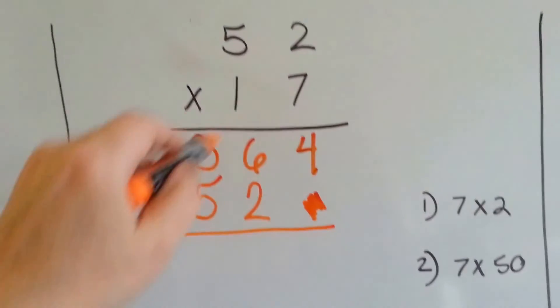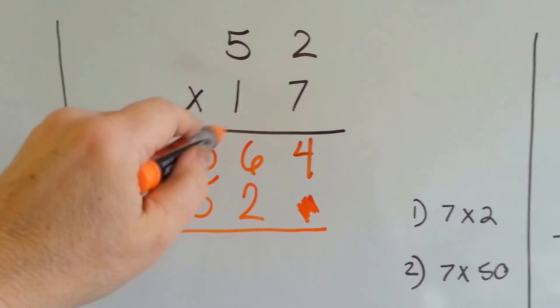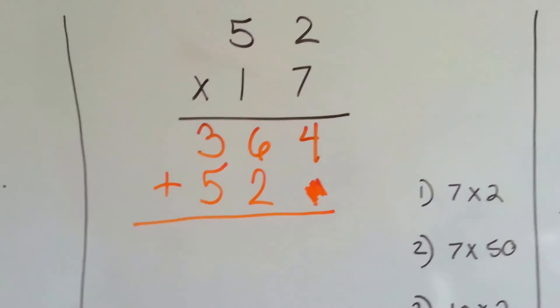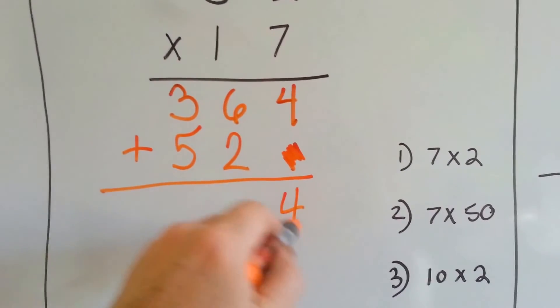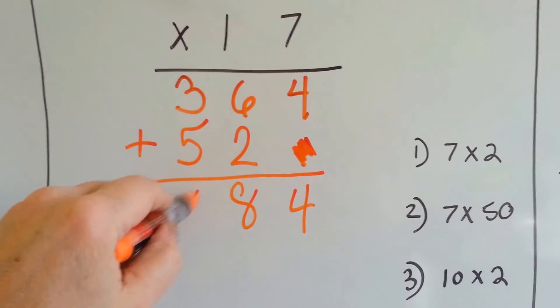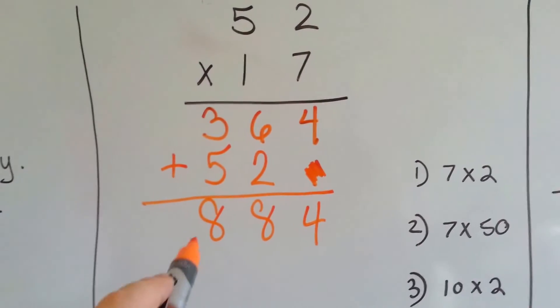So it's real important when you do the carryover that you get rid of it or scratch it out before you do the next place value, okay? 4 plus nothing drops down to 4. 6 and 2 is 8, and 3 and 5 is 8, and 52 times 17 is 844.